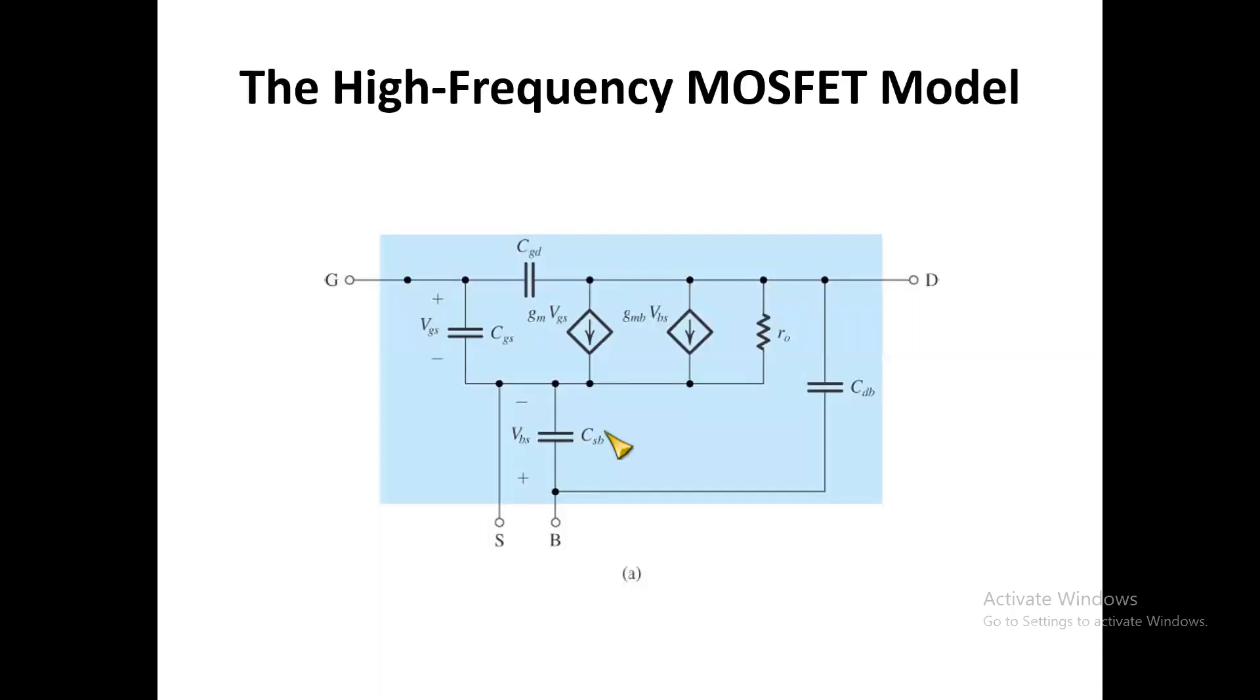The high frequency model has four different capacitors between the drain and the substrate, between the gate and the substrate (CGS), between the gate and the drain (CGD), and so on. In addition to the low frequency model, we have the dependent current sources GM*VGS and GMB*VBS, and the output resistance R0.